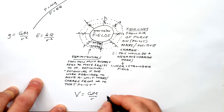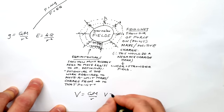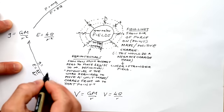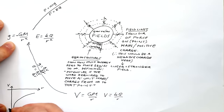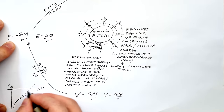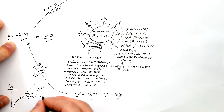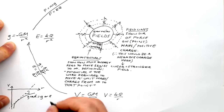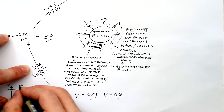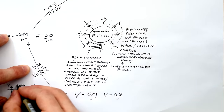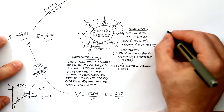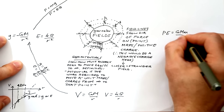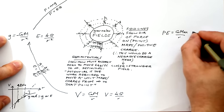Potential equals minus GM over r for gravitational fields and kq over r for electric fields. To get from potential to field strength, take change in potential divided by change in distance. On a graph of potential against distance — always a 1/x curve — the magnitude of the gradient at any point equals the field strength there. That's why field strength has the alternative name potential gradient. The area under a force-distance graph gives the change in potential energy.